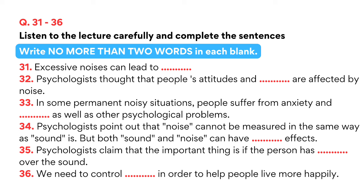Both sound and noise can have negative effects, but what is important is whether the person has control over the sound. People walking down the street with stereo earphones, listening to music that they enjoy, are receiving a lot of decibels of sound, but they're probably happy hearing sounds which they control. On the other hand, people in the street without stereo earphones must tolerate a lot of noise which they have no control over. It is noise pollution that we need to control in order to help people live more happily.